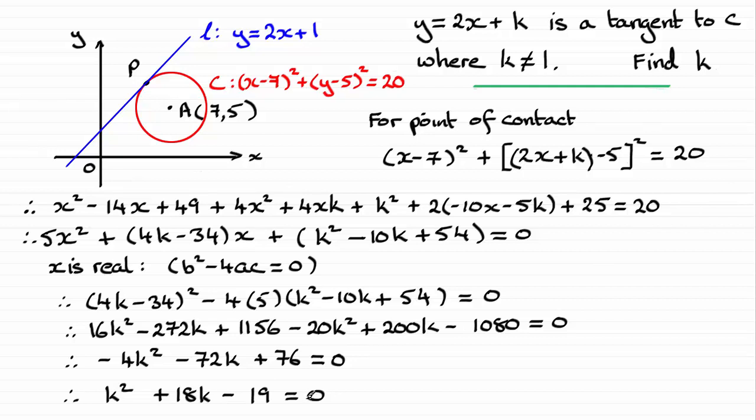And I can factorize this. Factorizing it in the usual way gives me k minus 1 times k plus 19 equals 0. Now that would lead to k minus 1 equaling 0 or k plus 19 equals 0. Well if k minus 1 equals 0 that would lead to k equaling 1, and we know that can't be the case because k cannot equal 1. That would give us this tangent. So therefore k plus 19 must equal 0, leading to k equaling minus 19.